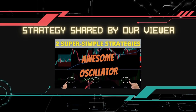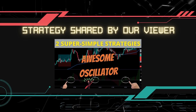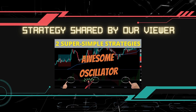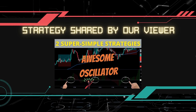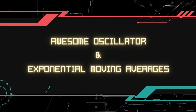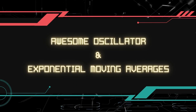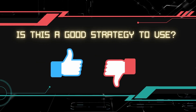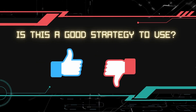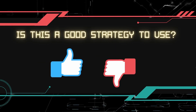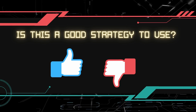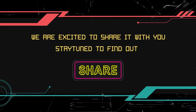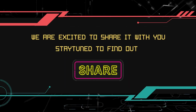In this video we will be testing out a strategy from a YouTube video that our viewer has shared with us. This strategy uses the awesome oscillator and the exponential moving average to provide buy and sell signals. We have coded this strategy into an expert advisor and done some backtesting to see if this strategy is profitable. We are excited to share this strategy with you.